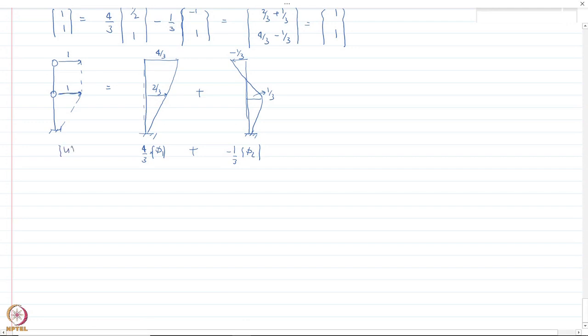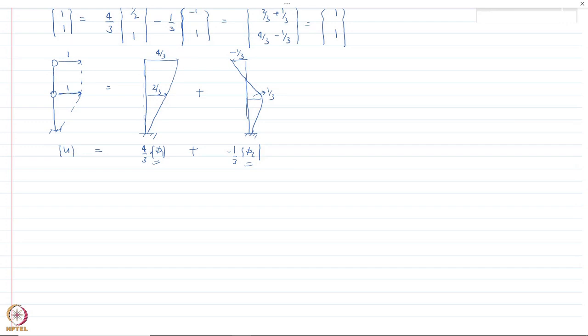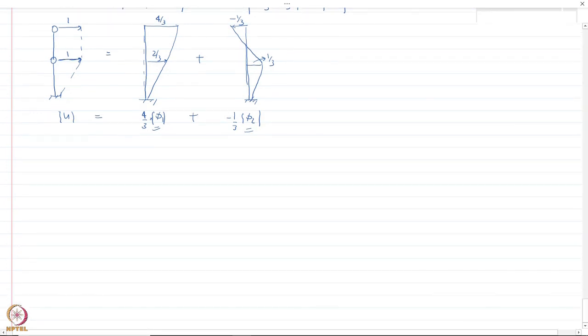Let us verify: u = (4/3)·[1/2, 1] + (-1/3)·[-1, 1] = [2/3 + 1/3, 4/3 - 1/3] = [1, 1]. The expansion is correct. So through modal expansion, at any time instant, whatever displacement is given can be expanded in terms of contributions of the first mode, the second mode, and so on.